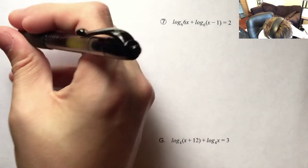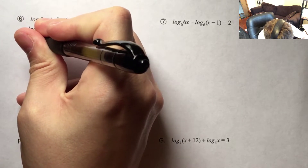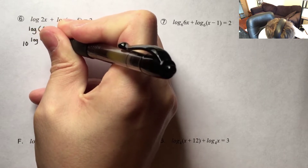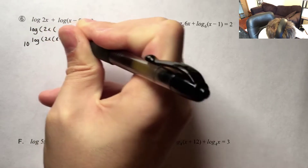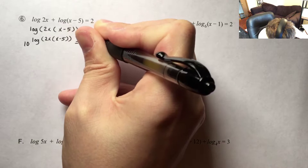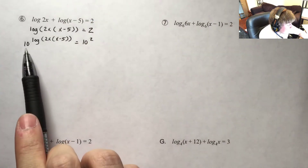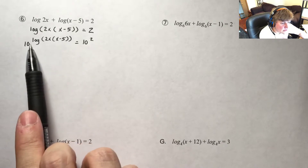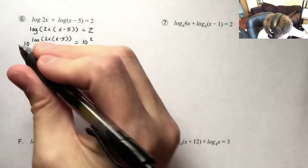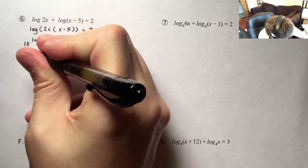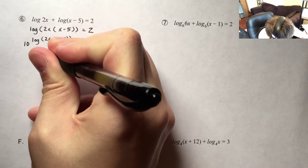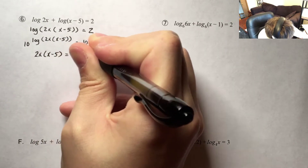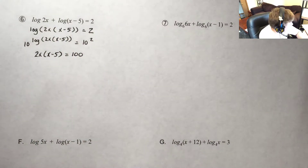Log base 10 means I'm going to take 10 to the power of log base 10 of 2x times x minus 5. We've elaborated on this — if I have log base 10, I take 10 to the power of all that because these will undo each other. Since these undo each other, I'm left with 2x times x minus 5, and that's equal to 100 — getting 100 from 10 to the second power.